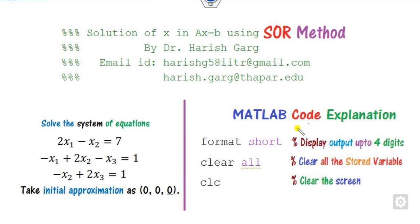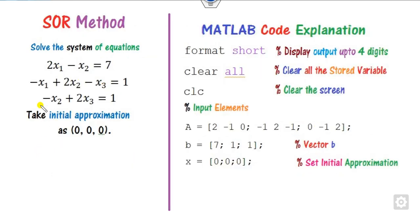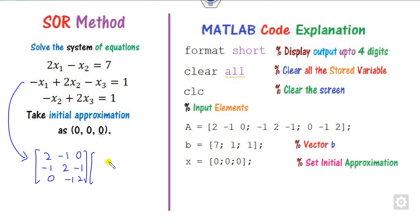To start the MATLAB code, write these three lines: format short (to display results to four decimal places), clear all (to clear workspace variables), and clc (to clear the screen). Then input the coefficient matrix A as [2, -1, 0; -1, 2, -1; 0, -1, 2], the right-hand side vector B as [7; 1; 1], and the initial approximation X as [0; 0; 0].